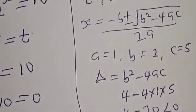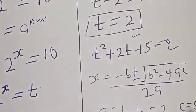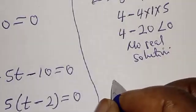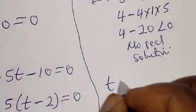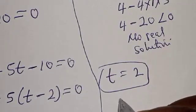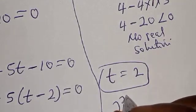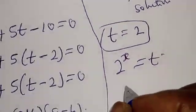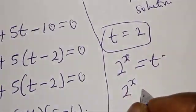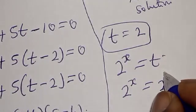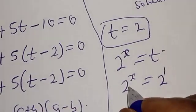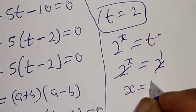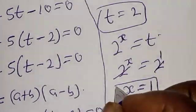The only root we have is t equals 2. Since we defined 2 raised to power s equal to t, we have 2 raised to power s equals 2, which is the same as 2 raised to power 1. Since they have the same base, we equate the exponents. Therefore s equals 1. That is the value of s.